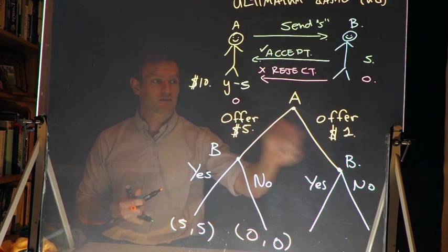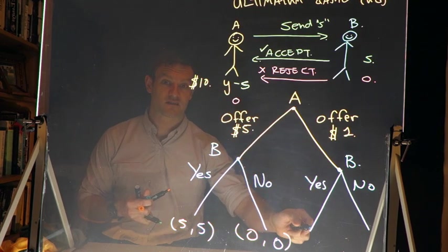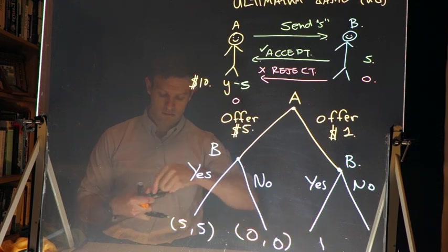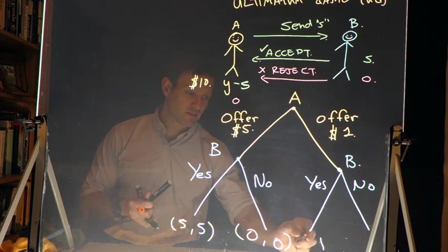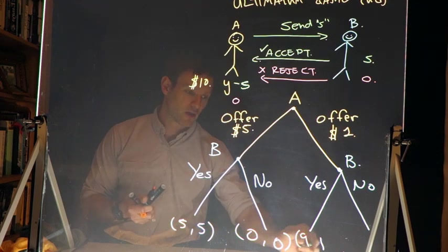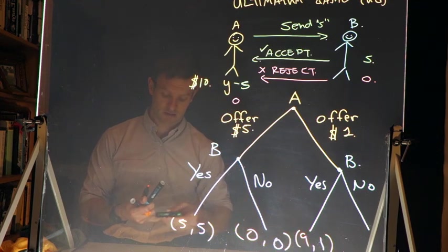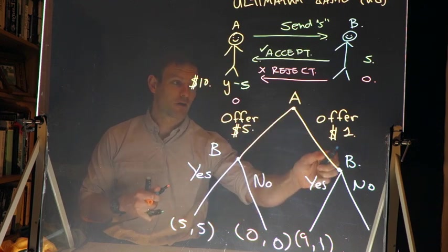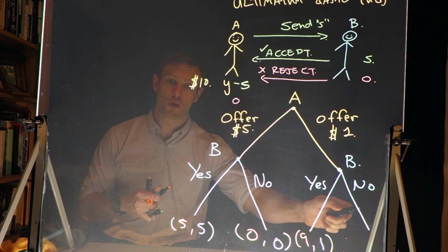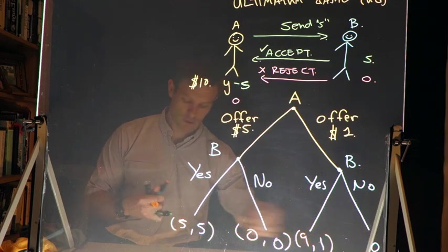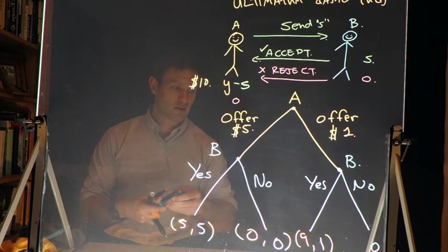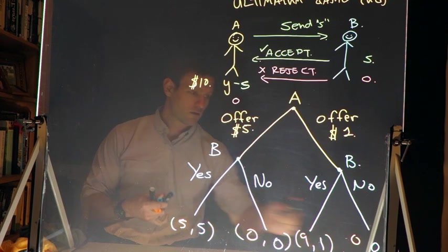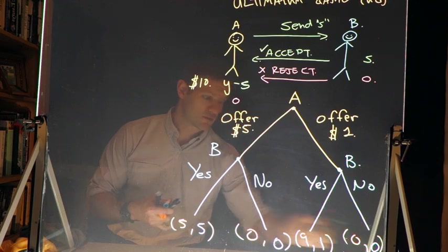If A makes an offer of one dollar, and B says yes, they accept the offer, B then gets one dollar, A gets nine dollars. So nine dollars plus one dollar is ten dollars again. And finally, if A makes an offer of one dollar, and B says no, and rejects that offer, B gets zero dollars, and A gets zero dollars. So we've got zero, zero as the potential payoffs there.